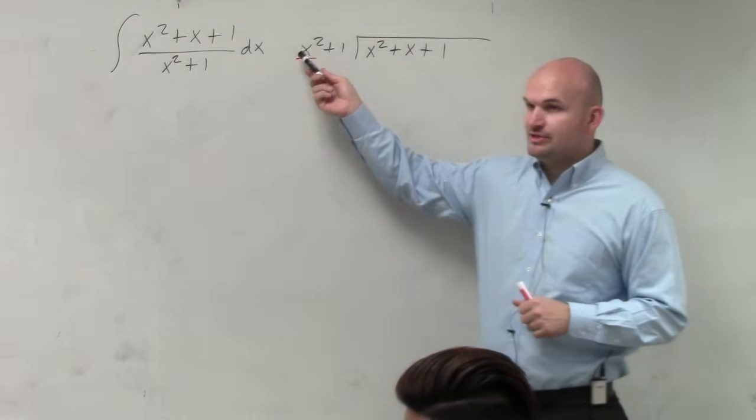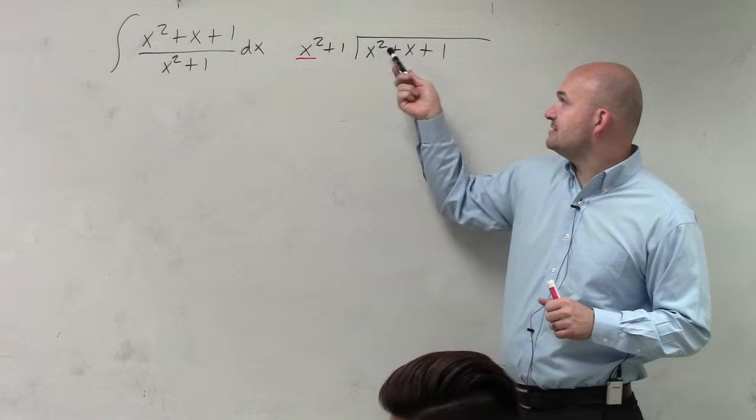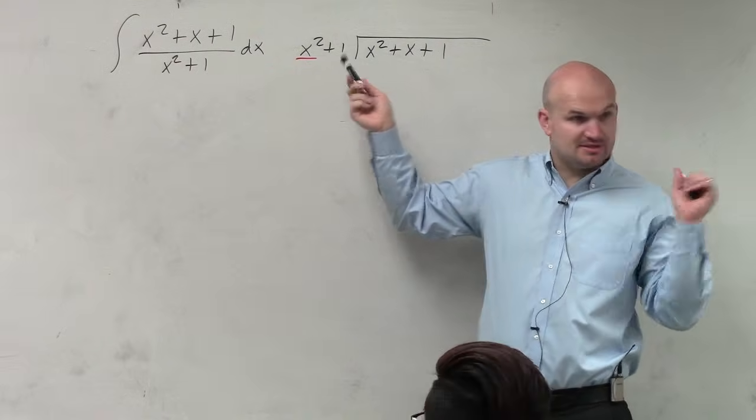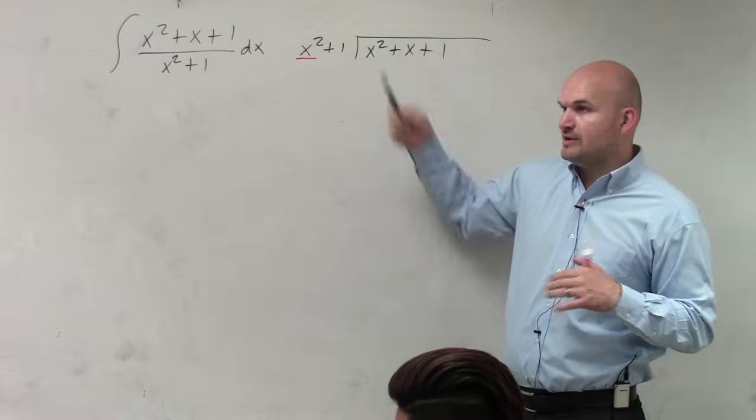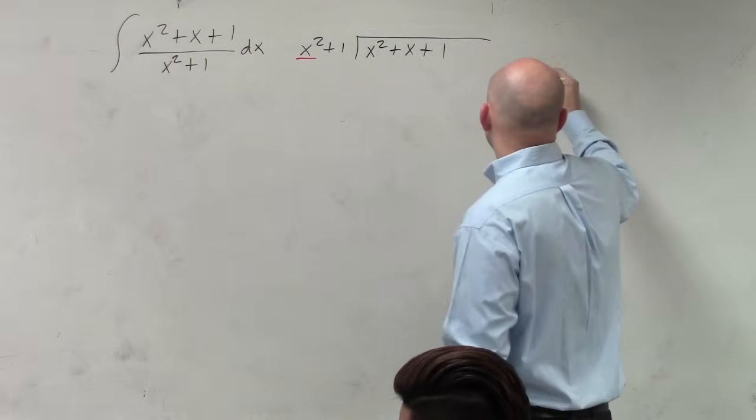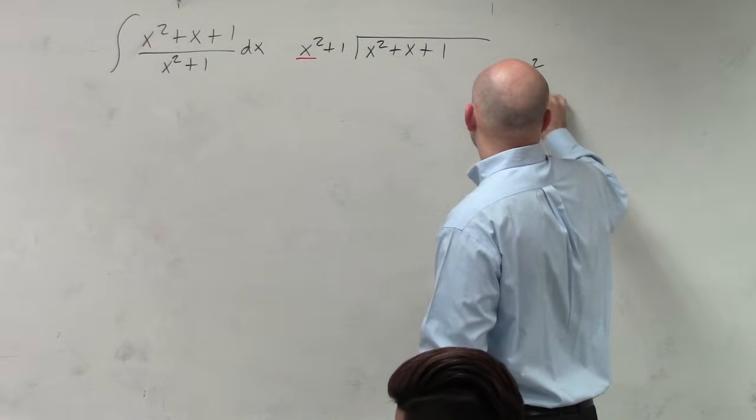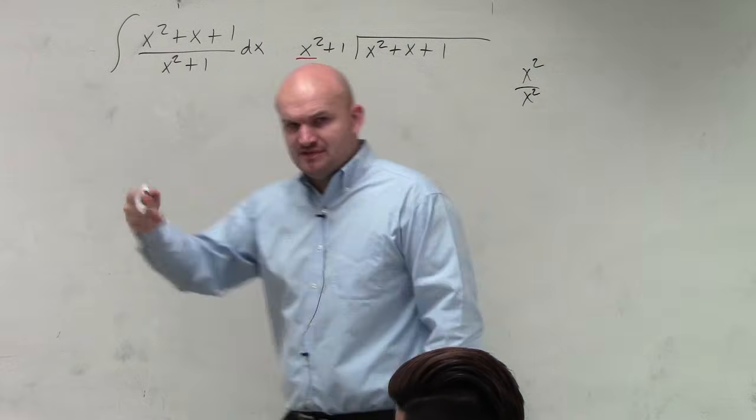So all we simply do is take this first term. We say how many times, and then you go into the first, just like we did with the numbers. You go into the first term of your dividend. How many times does x squared divide into x squared? And again, even if you get caught up on this, you kind of forget. Just write it out. How many times does x squared divide into x squared?